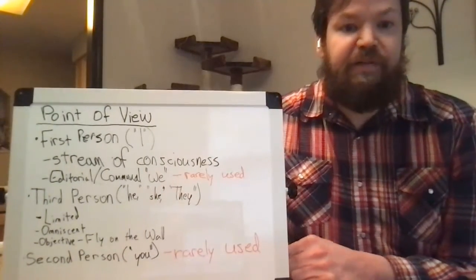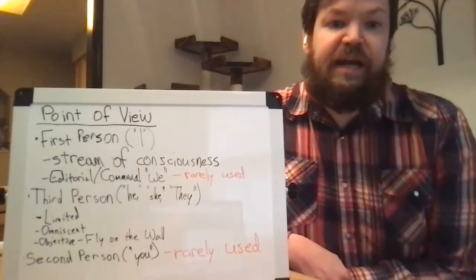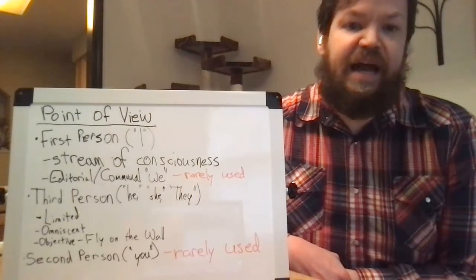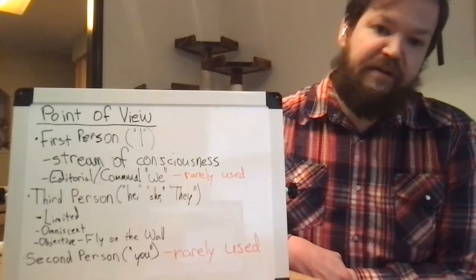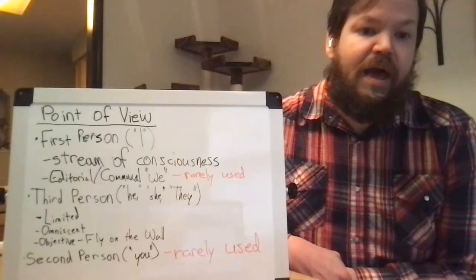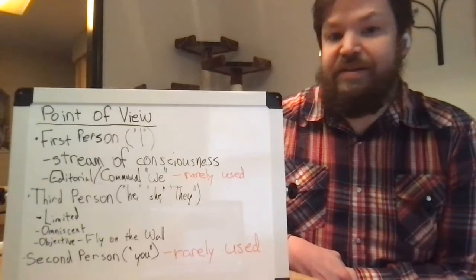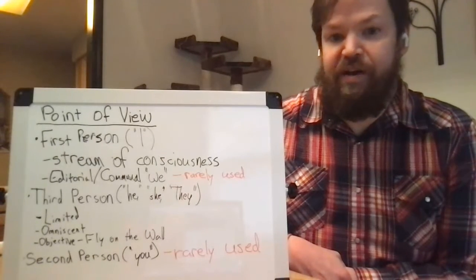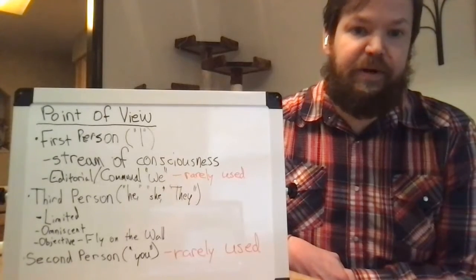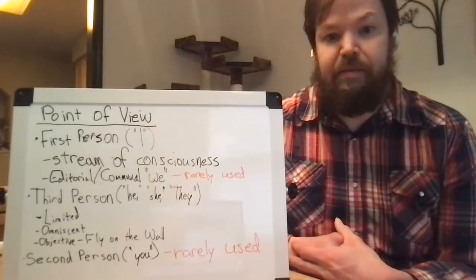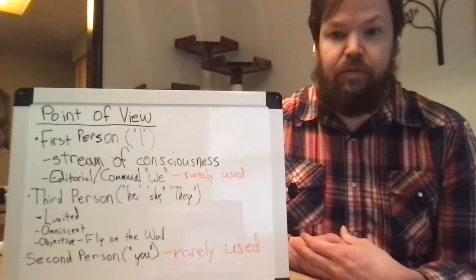The last point of view is second person. Second person is 'you.' It's rarely used, especially outside of choose-your-own-adventure novels. It seems to be the place where it would most likely be used, but it's very rarely used because it's difficult to be consistently successful writing a full-length story or novel in second person. For a very short piece it could be useful, but it's difficult to make it work with something longer.